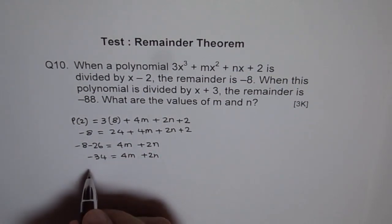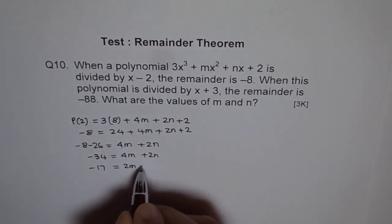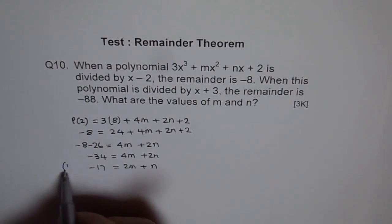We can divide by 2. We get -17 equals 2m + n. So that becomes our equation number 1. Let's call this equation 1.